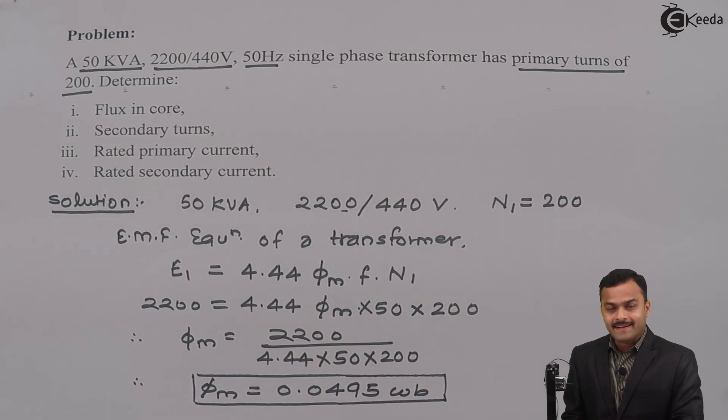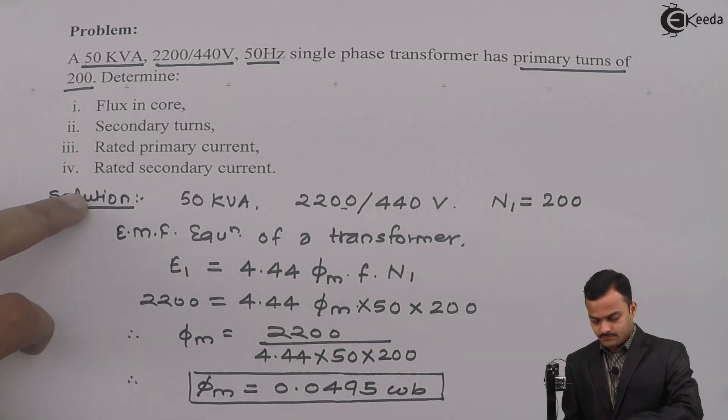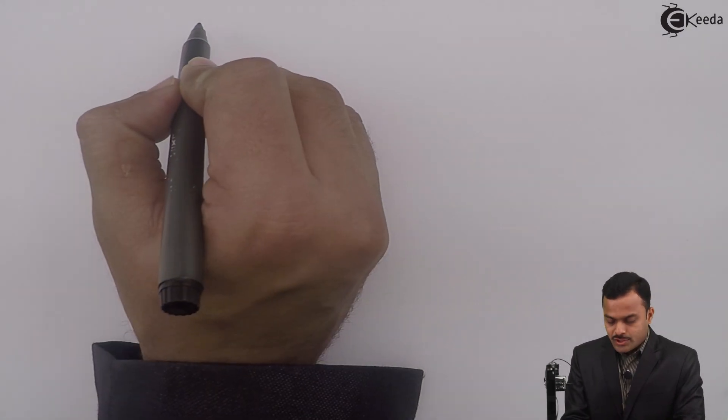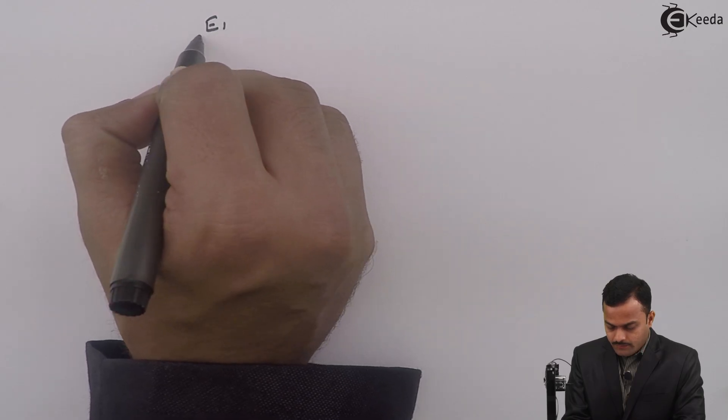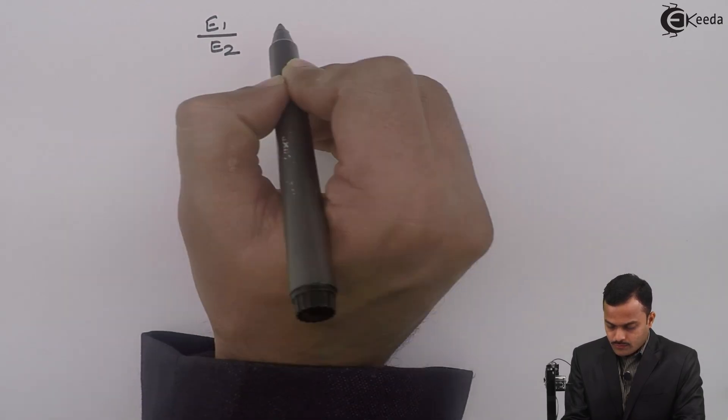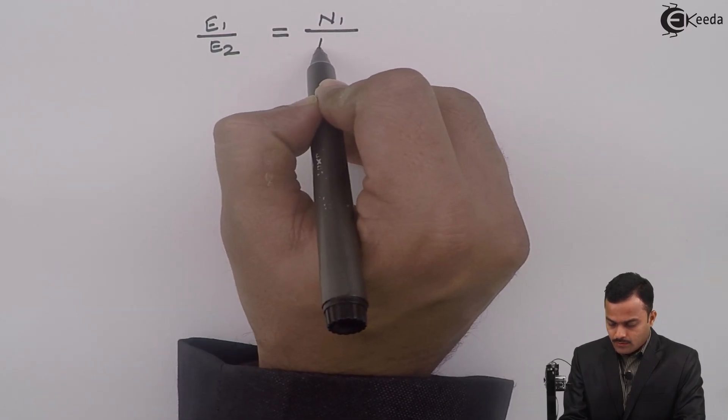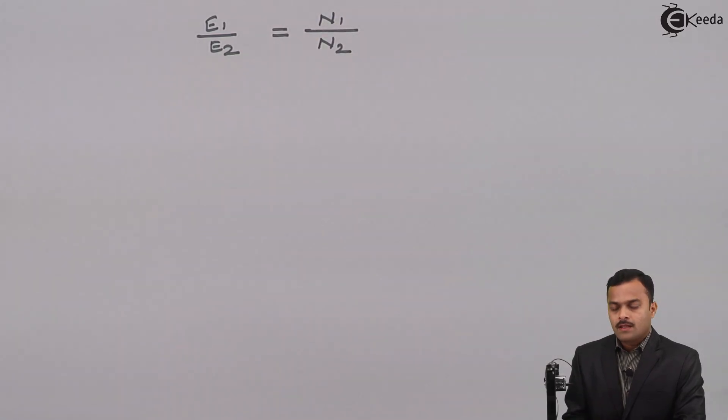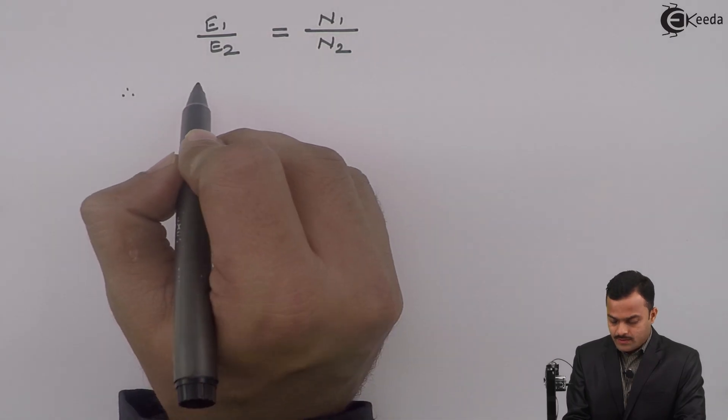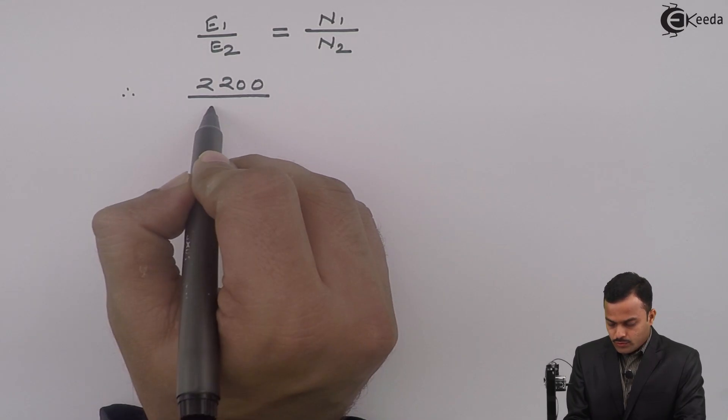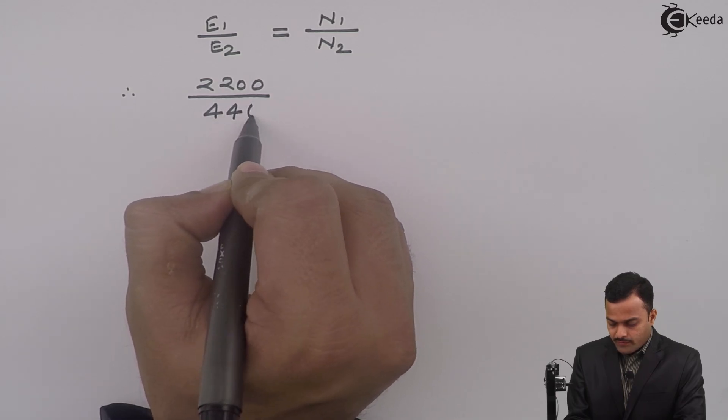Let's find out secondary turns. Now we know EMF ratios E₁/E₂ is nothing but N₁/N₂. So E₁ is given, 2200. E₂ is 440.